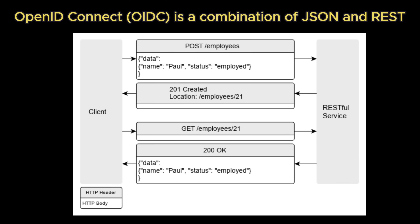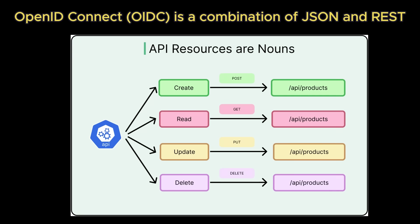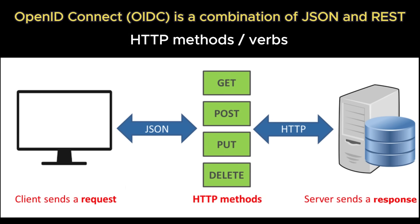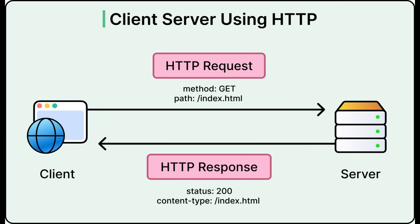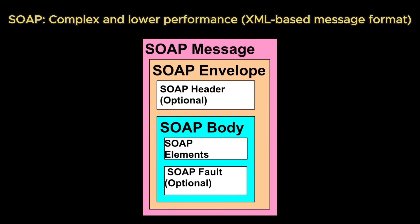OpenID Connect, or OIDC on the other hand, is a JSON and REST-based protocol standardized by the OpenID Foundation. REST, which largely replaced SOAP, is a simpler stateless architectural style that uses standard HTTP methods — GET, POST, PUT, DELETE — and lightweight JSON instead of XML. It's faster, easier to integrate, and more web-friendly. SOAP's structure is too verbose and complicated, and it requires more overhead, making it way harder to develop and maintain compared to the simpler, human-readable nature of REST.